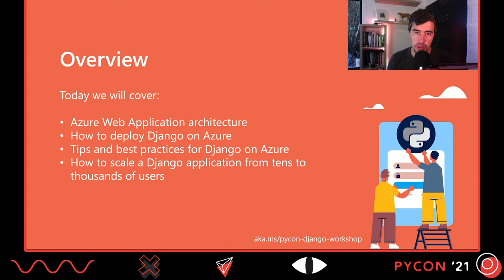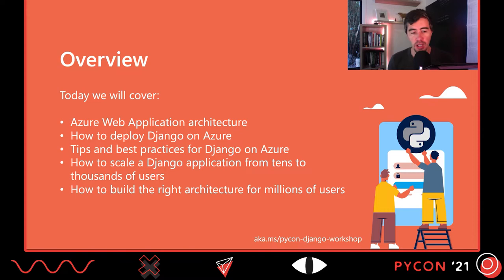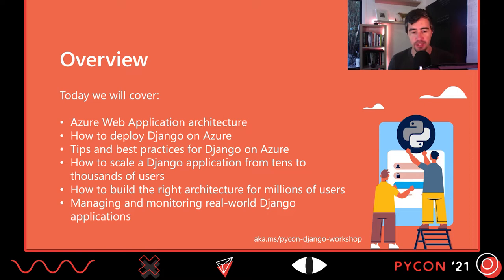We'll talk about scaling from the smallest configuration — like a dev test environment or something with a small number of users — and how to scale that up as we have more and more users. We'll look at building the right architecture to reach millions of users, scaling from the smallest part all the way up to a big successful app. We'll also look at monitoring and how to implement it on both the front end and back end services.